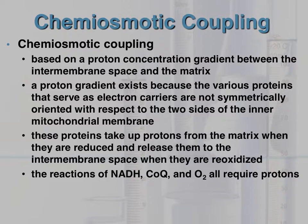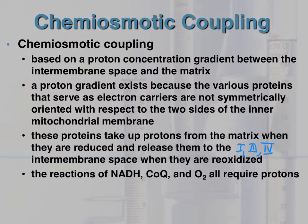The fancy term for it is chemiosmotic coupling. The proteins take up protons from the mitochondrial matrix. It's important to know which complexes are involved — the ones that pump protons are complexes one, three, and four. That's why, if you start with FADH2, you don't go through complex one, so you don't pump as many protons across — complex two does not go all the way across and does not shuttle protons from the matrix to the intermembrane space.